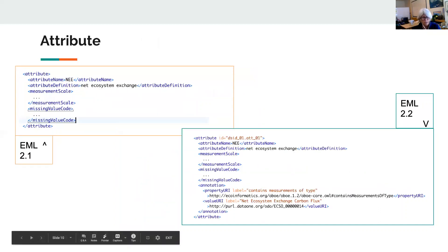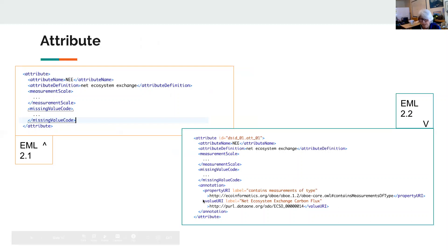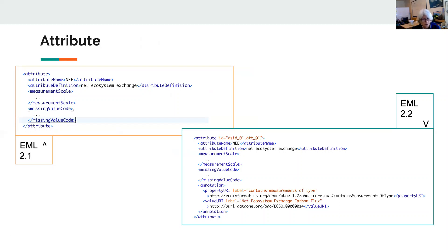Here's an example of the second area we're going to concentrate on — an attribute-level annotation, which is an annotation of a measurement. On the left is the old EML 2.1 attribute, where really all you have is a definition and an attribute name. On the right is the 2.2 version, where there is also an annotation element that describes what kind of measurement and its value. Any element that is going to be annotated must have an ID attached to it. In this example, the 2.2 element has the attribute ID 'DSID01.01' — that's not present in 2.1. The EML 2.2 parser checks this now, and you'll see why that's necessary in a moment.